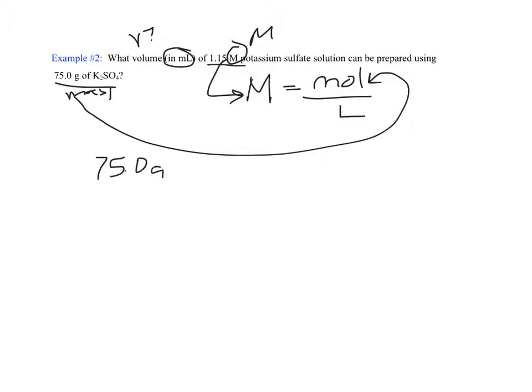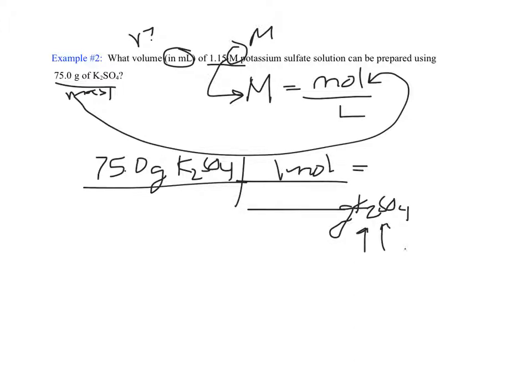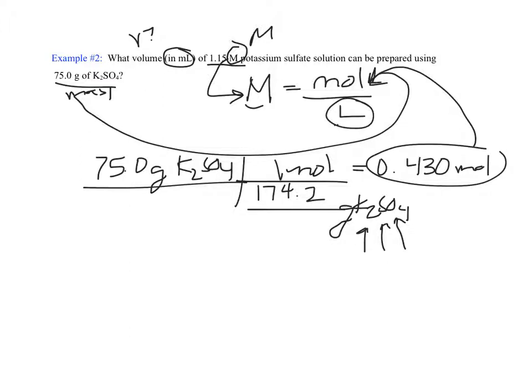But I hopefully remember how to convert mass to moles. So this is going to our periodic table to add up two potassiums, a sulfur, and four oxygens. So that molar mass ends up being 174.2, and so that's equivalent to 0.430 moles. Now that number can plug in to the top. And then it looks like we have the M, we have the moles, and we can solve for the volume.